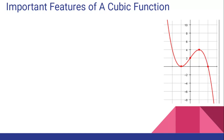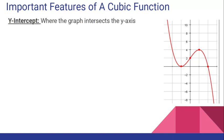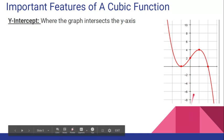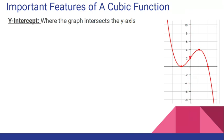Here's another example of a cubic function. Let's try to find the y-intercept — where does this graph intersect the y-axis? You should go up and down your y-axis until you find where it crosses. You should look at this point right here, which is at the 2. It's at (0, 2). I just want the y value, so it's y equals 2.